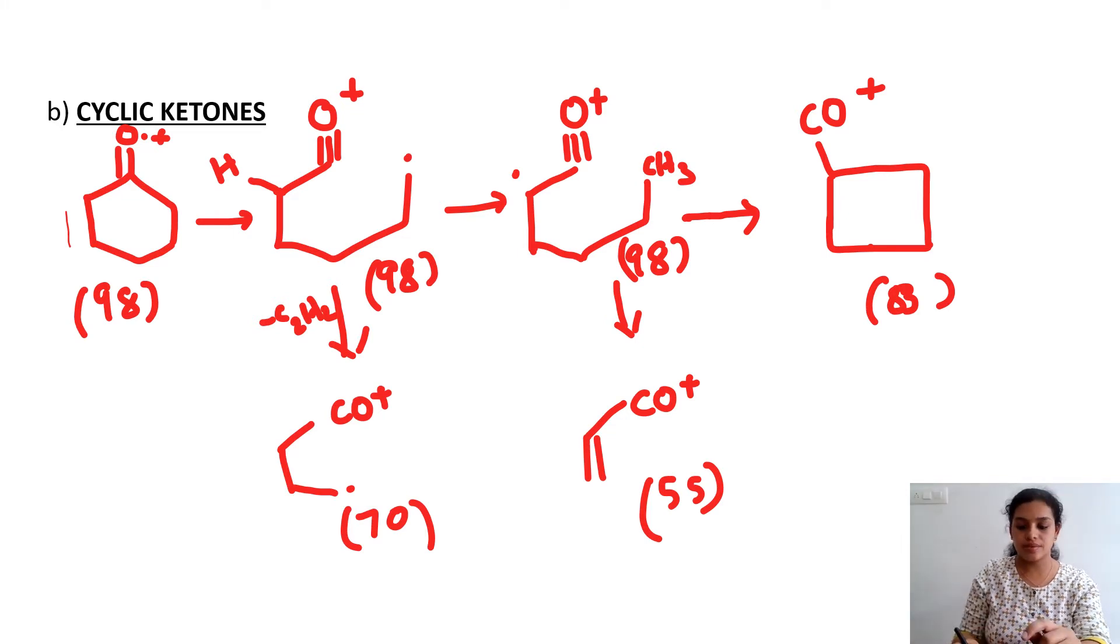When it comes to cyclic ketones, the fragmentation is rather interesting and it may lead to a variety of products. In the first step, the fragmentation occurs like this to give you a dot on this carbon atom and another dot on this carbon atom. And this dot combined with the dot of oxygen which already existed to give you the third bond, the triple bond. And this is the first fragment which is at m/z equal to 98.